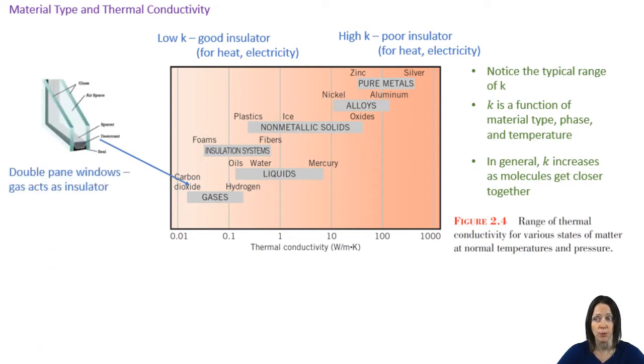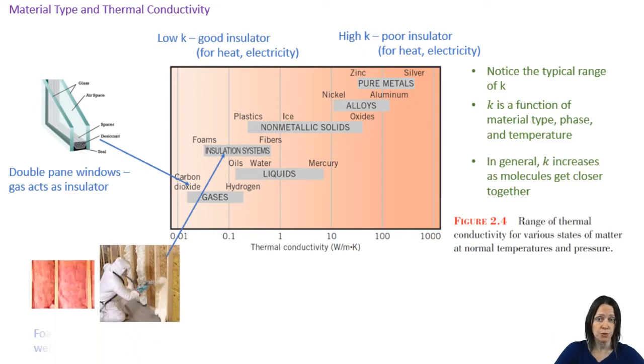That's why double pane windows are better for restricting heat loss from a house or vice versa. The gas that's trapped between the two or sometimes three glass panes, typically argon but could be air, although argon has a thermal conductivity about two-thirds that of air. That gas acts as a very good insulator. Fibers and foams are good insulators as well, partly due to the fact that there's gas, maybe air, trapped between the solid material.